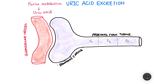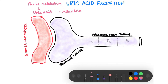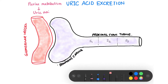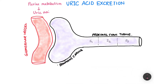In other mammals it forms something known as allantoin. Now, uric acid once formed passes through the glomerular vessels and when it passes through the glomerular vessels it gets filtered out right into the Bowman's capsule.